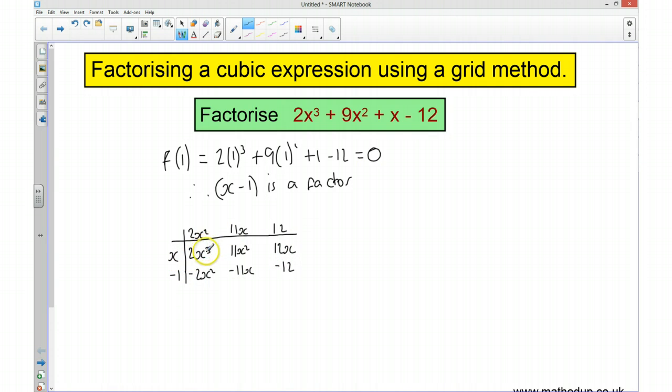And this is 2x cubed plus 9x squared plus x take away 12, which means x take away 1 multiplied by 2x squared plus 11x plus 12. So I now need to factorise this here.